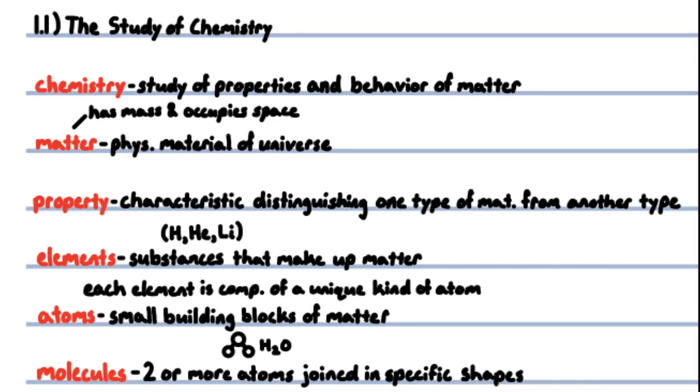Chemistry is the study of the properties and behavior of matter. Matter is the physical material of the universe. Matter has mass and occupies space. A property is any characteristic that allows one type of matter to be distinguished from another type of matter. All matter is composed of about 118 substances called elements.